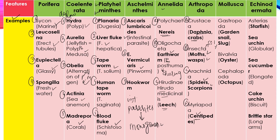Next is Mollusca. The first class is Gastropoda — examples are garden snails and slugs. They are asymmetrical animals. Next is Bivalvia — example is oyster. Cephalopoda is the third class — example is octopus. Cephalopods have a closed circulatory system while other molluscs have an open circulatory system. Next is Echinodermata — the first example is starfish. Sea cucumber has an elongated shape. Sea biscuit has a biscuit shape. Brittle star has long arms.